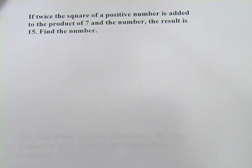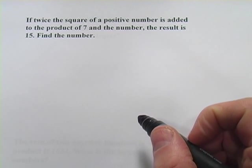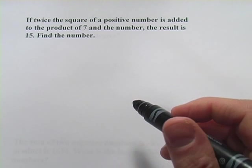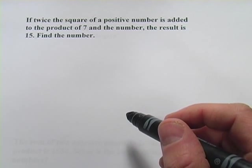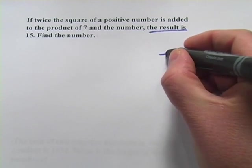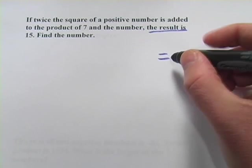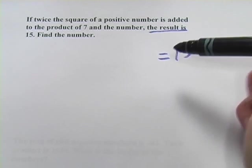All right, let's do one more of these. This one says, if twice the square of a positive number is added to the product of 7 and the number, the result is 15. Find the number. So the result is, that's our equal sign, and we had a 15 after that. So that side of the equation is pretty easy. Let's work through what comes on the left here.